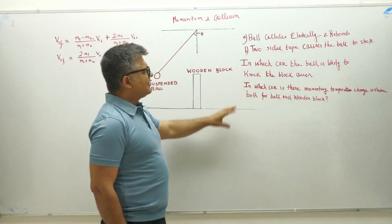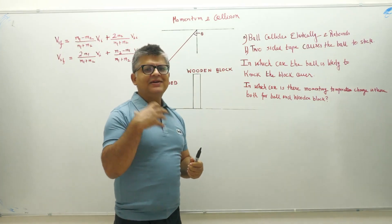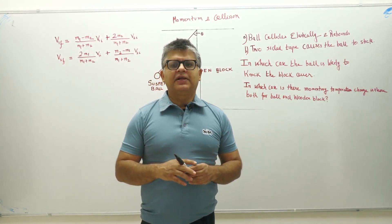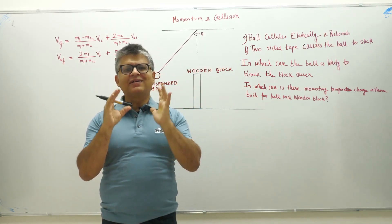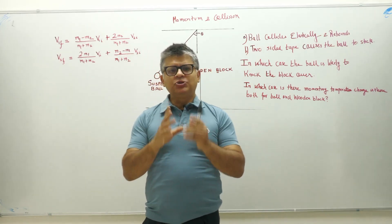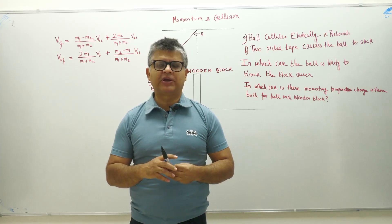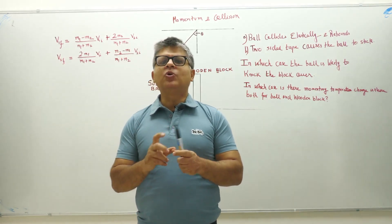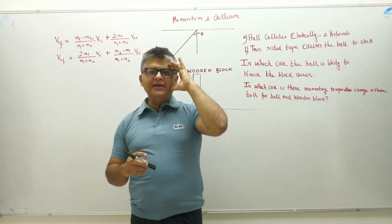There is another part of the question: in which scenario will heat be generated on the ball and the block? Now, in collisions there are two things at play: momentum and kinetic energy. If both are conserved, it's a 100% elastic collision. If the two bodies stick together, it's a perfectly inelastic collision — there is a loss of kinetic energy though momentum remains conserved. In an inelastic collision, the bodies don't stick but there is still a loss of kinetic energy while momentum is conserved.